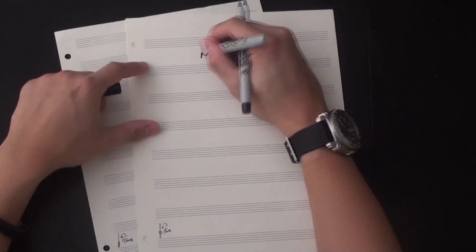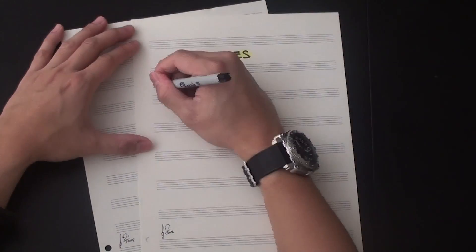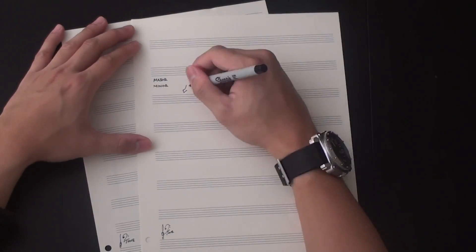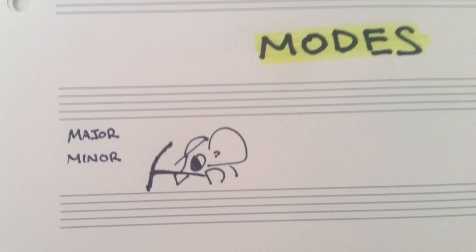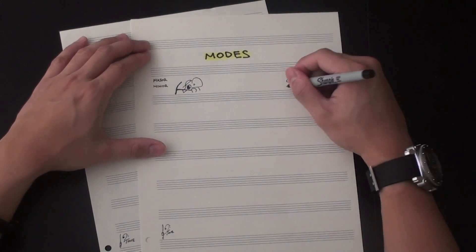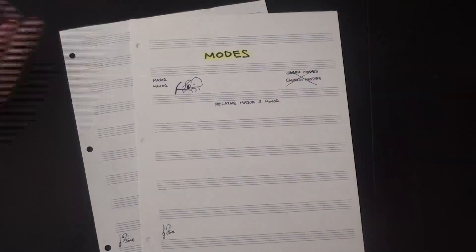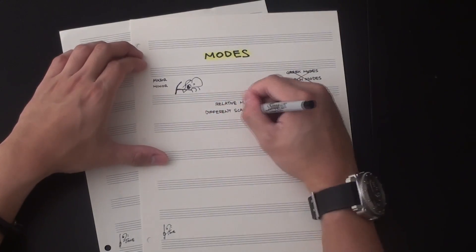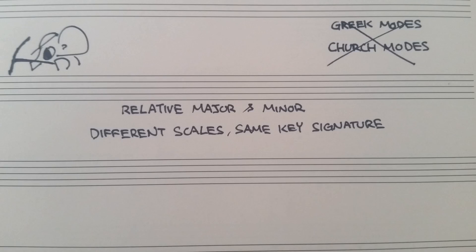Hey guys, welcome to 12tone. Today we're going to talk about modes. Up until now we've only discussed major and a little minor, but that's not even scratching the surface of the vast array of scales available to us. Modes are one of the simplest groups of variant scales out there, and they're also one of the coolest. They're also known as Greek modes or church modes, but those names are historically inaccurate so I'll avoid them. In the minor video we talked about something called relative major and minor, where two different scales with two different roots share the same key signature. Modes can be thought of as an extension of that idea.